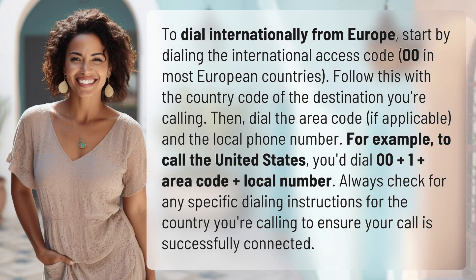To dial internationally from Europe, start by dialing the International Access Code, OO, in most European countries. Follow this with the country code of the destination you're calling. Then, dial the area code, if applicable, and the local phone number.